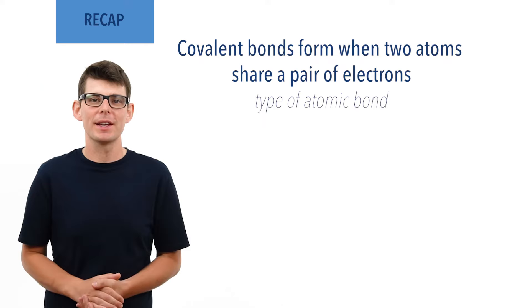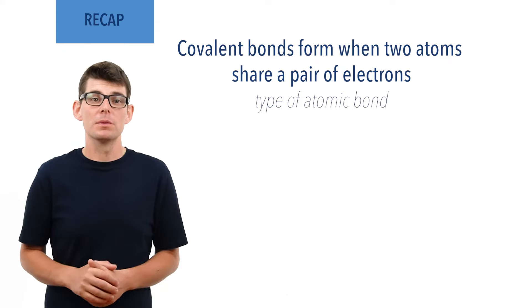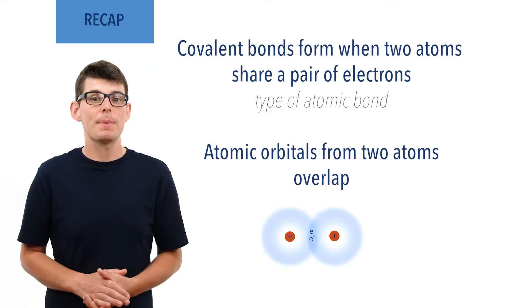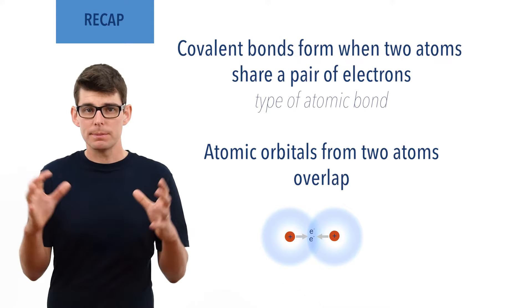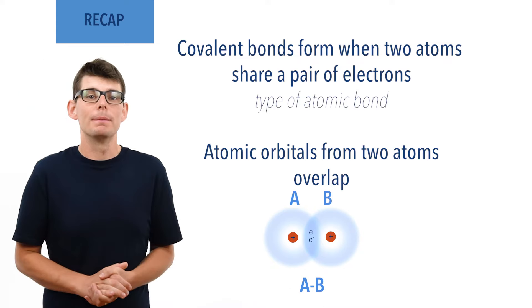A covalent bond is formed when two atoms share a pair of electrons — it is an example of an atomic bond. When a covalent bond forms, half-filled atomic orbitals from two different atoms overlap, creating a bonding orbital that a pair of electrons can exist in. Electrons are negatively charged and the positively charged nuclei of both atoms are attracted to the electron density in the new bonding orbital. This pulls both atoms together and creates a covalent bond, drawn as a single line between the two atoms.